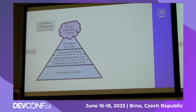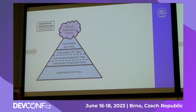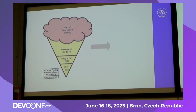You have probably seen the ideal software testing pyramid pattern, which says you should have a huge amount of unit tests and only a little portion of end-to-end tests. And you have probably also seen the anti-pattern, which says having a huge amount of end-to-end tests is wrong.